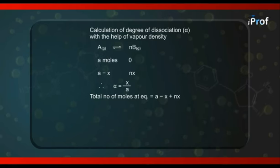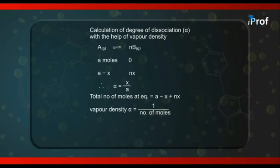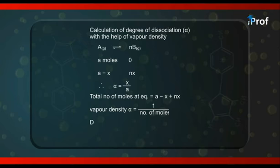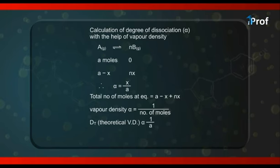Further, since we know that vapor density is directly proportional to 1 upon number of moles, we can say that DT, that is the theoretical vapor density, will be proportional to 1 upon A, because we have started our work with A moles of the reactant.